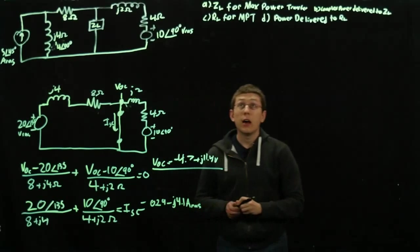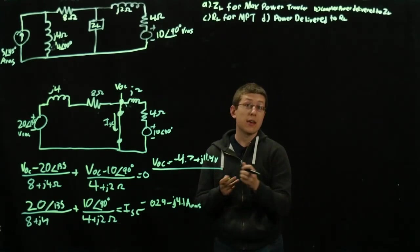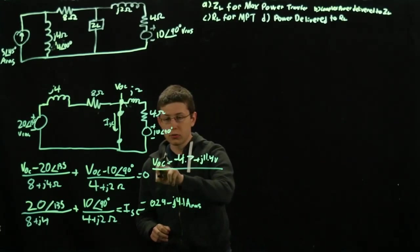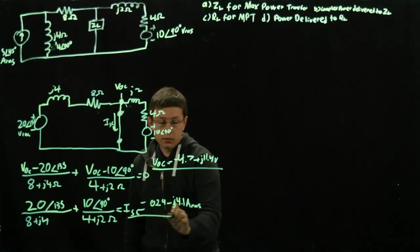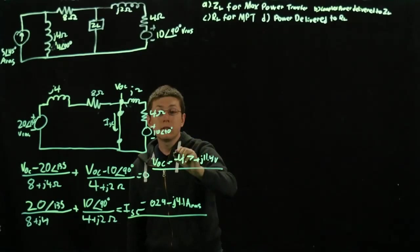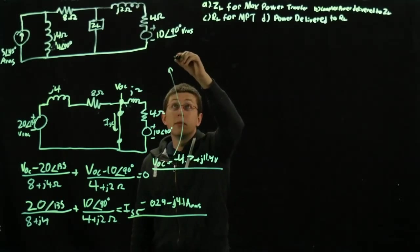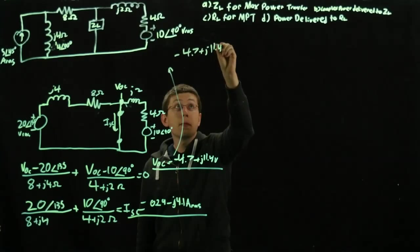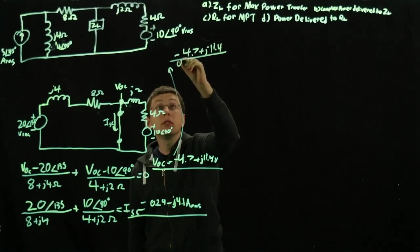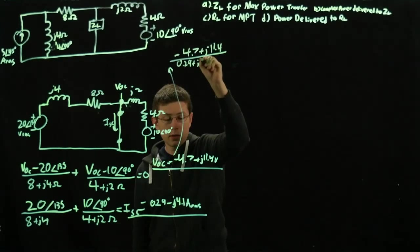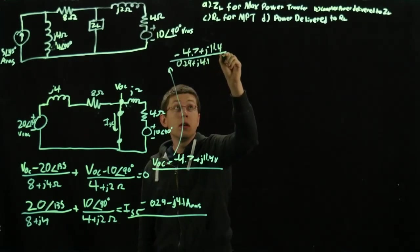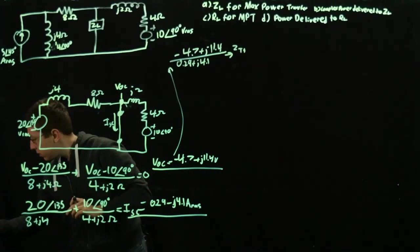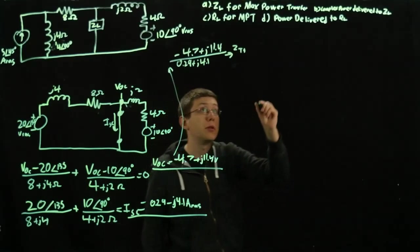Now to find our ZL, we need to find Z Thevenin and do the complex conjugate of that. So Z Thevenin is just going to be our VOC over our ISC. We do negative 4.7 plus J11.4 divided by 0.29 plus J4.1, and this gives us a Z Thevenin of 2.7 minus J1.33 ohms.